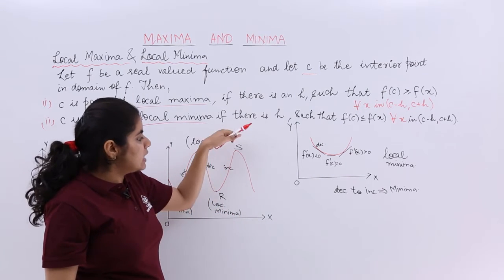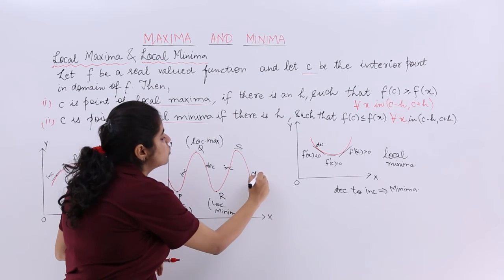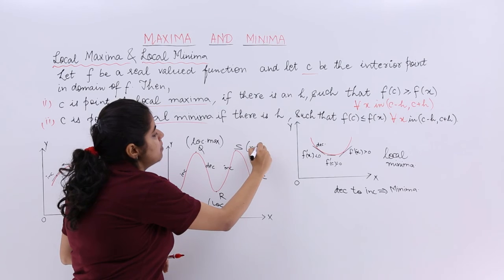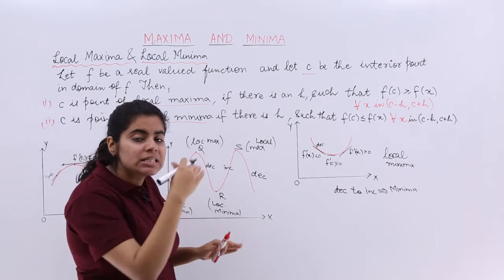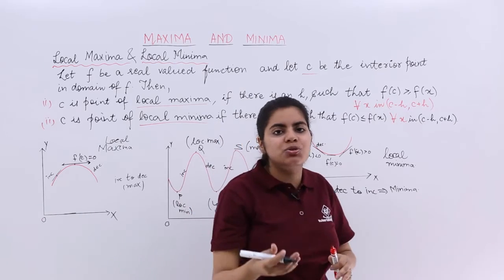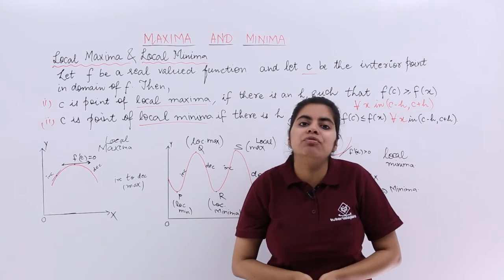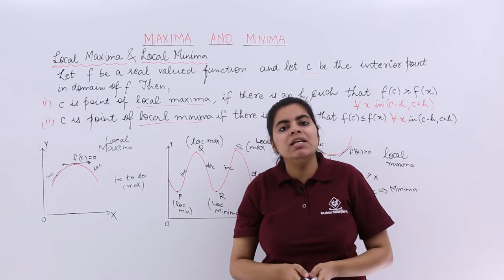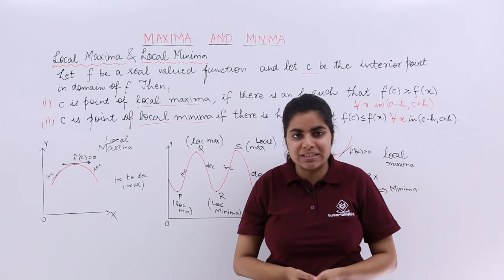Then again increasing, giving me a point called as S. Then again decreasing. So increasing to decreasing is maxima. So it is local maxima. So this increasing to decreasing, decreasing to increasing concept is very much related to the next topic. Which is called as the first derivative test. Please watch this video very much carefully again and again. So as to understand the next topic better.